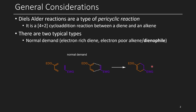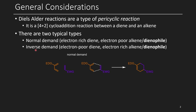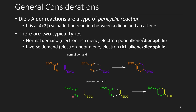This reaction occurs, favoring this as the major product. In addition to the normal demand Diels-Alder, you can also change up the electronics a little bit. You can have an inverse demand Diels-Alder, which involves an electron-poor diene and an electron-rich alkene or dienophile. Here you have an electron-withdrawing group instead of a donating group, and the alkene or dienophile has an electron-donating group instead of an electron-withdrawing group. Overall, you get similar-looking products, but whether an electron-donating or withdrawing group is present on the diene or dienophile can change.